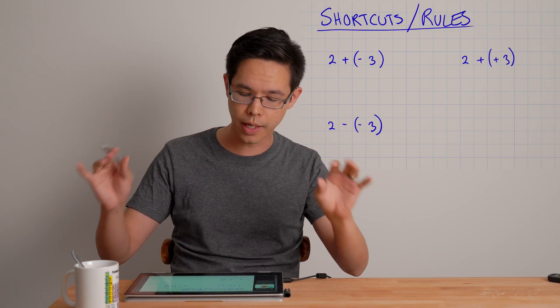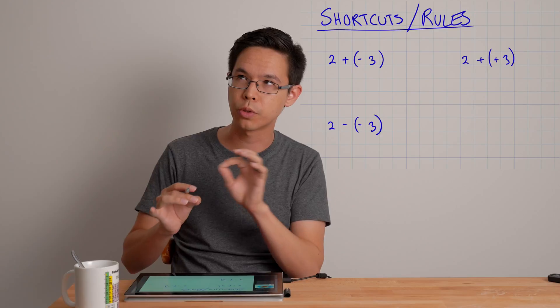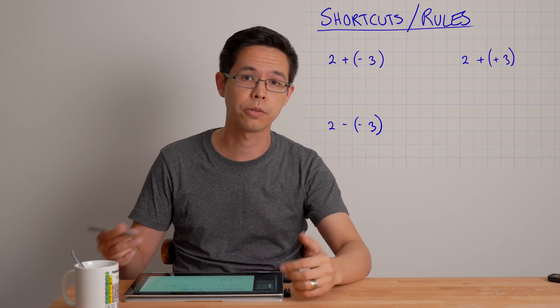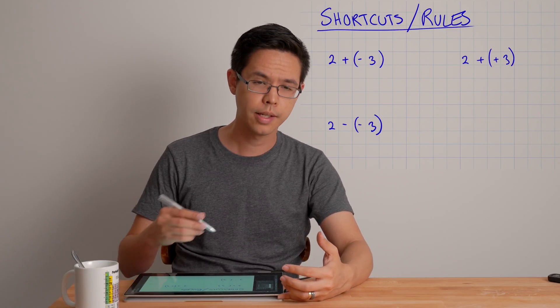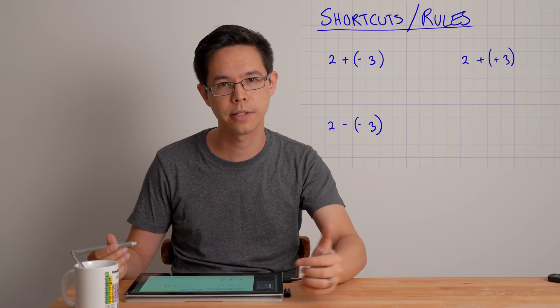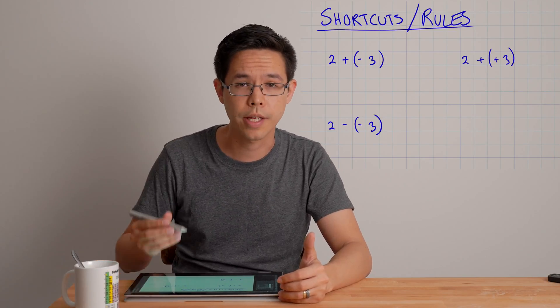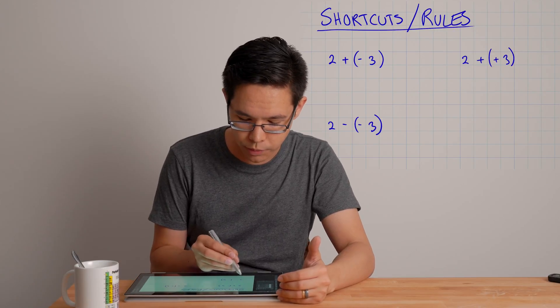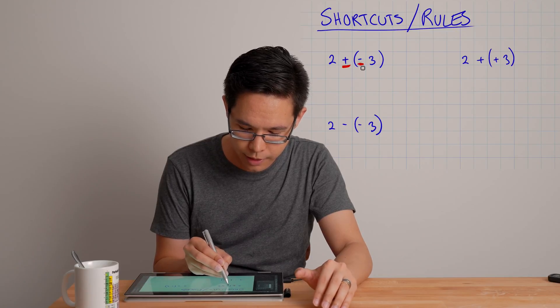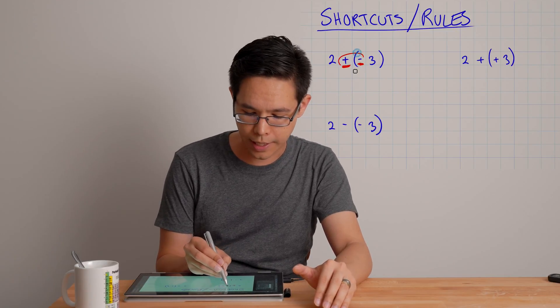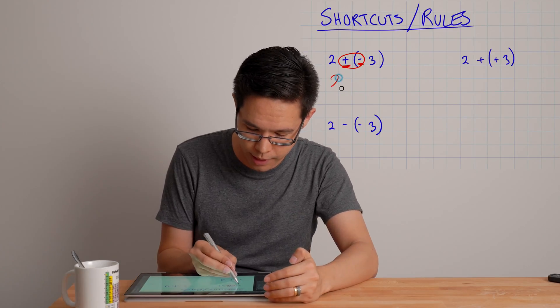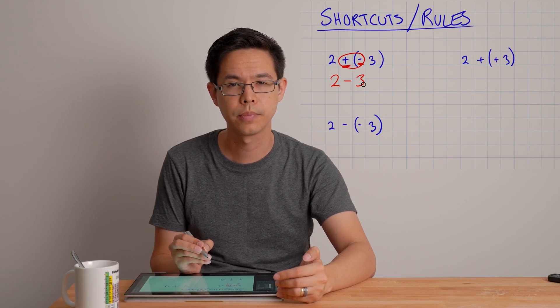Before I end the video I want to go over some shortcuts or rules you could apply to simplify the problem before you then go ahead and add things together or subtract things from each other. And that is that some of these plus and minus signs actually sort of overpower or sometimes cancel each other out, and we can use these as tools to simplify. So the first one here we've got 2 plus negative 3. I've got adding a negative number. When I've got that situation happening, the negative wins overall. So it's almost like I did a problem 2 take 3.